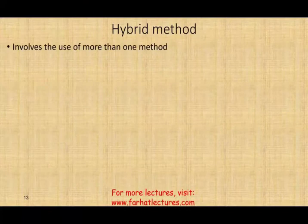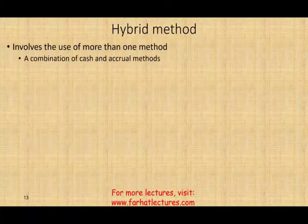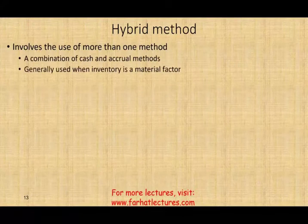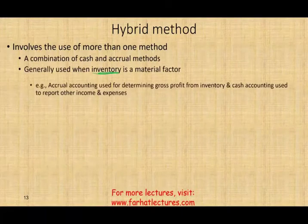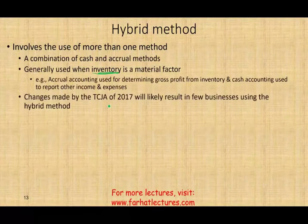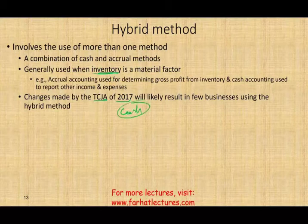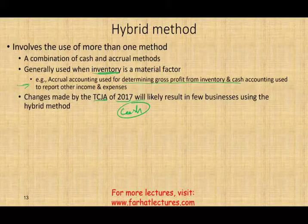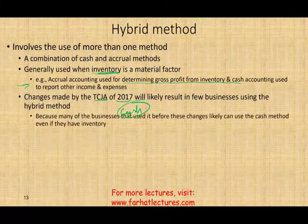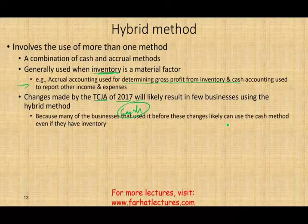The hybrid method involves using more than one accounting method — a combination of cash and accrual, generally used when inventory is a material factor. Under the traditional hybrid, accrual is used for determining gross profit from inventory, and cash is used for everything else. However, because of the Tax Cuts and Jobs Act, more small businesses can now use the cash method even with inventory, so fewer businesses will need the hybrid method going forward.